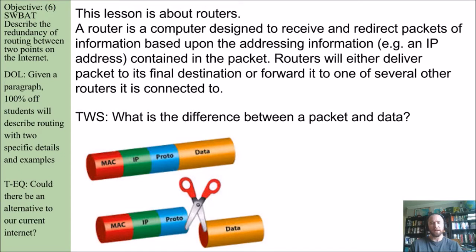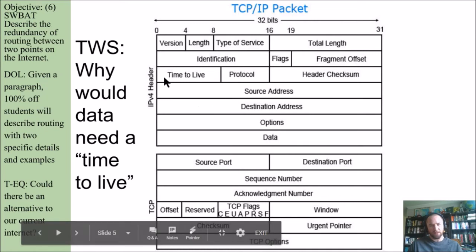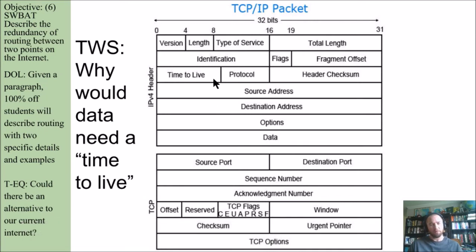What is the difference between a packet and data? If you need to use the picture to help, definitely go for it. So why would data need a time to live? Looking at this diagram of TCP/IP packets, I see a version number, length, type of service, and then I notice time to live. Why would somebody send out information and then expect that information to just disappear after its time to live period is over? Why would that be helpful to anyone?